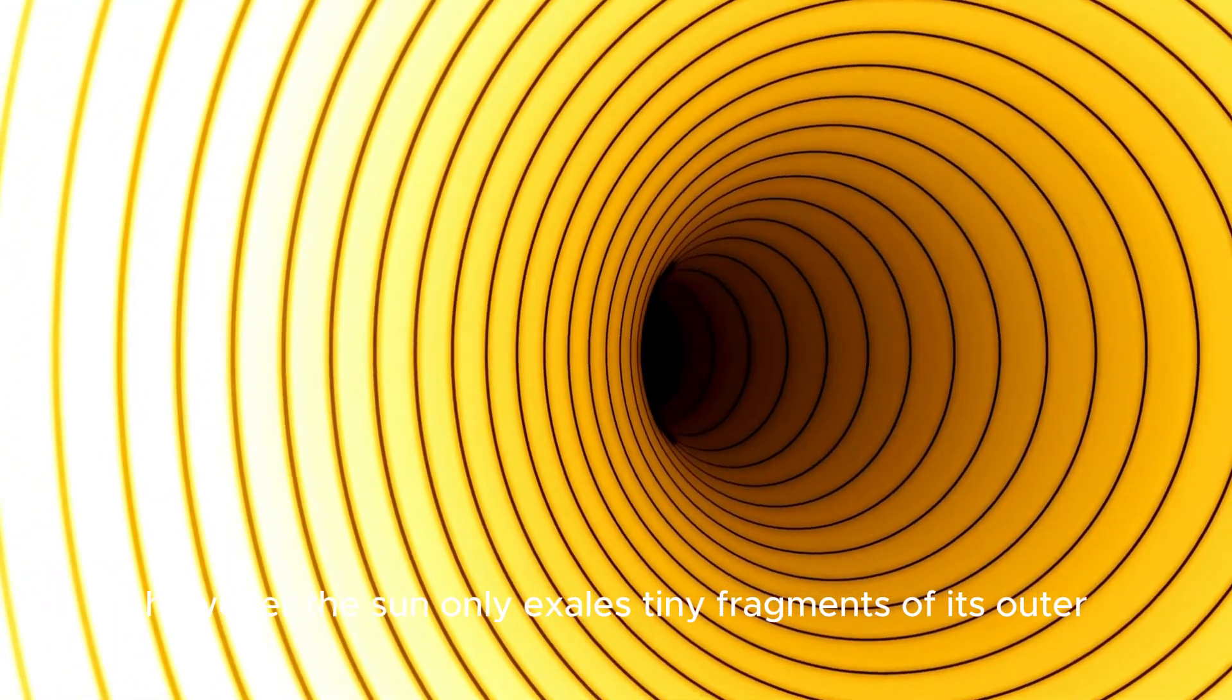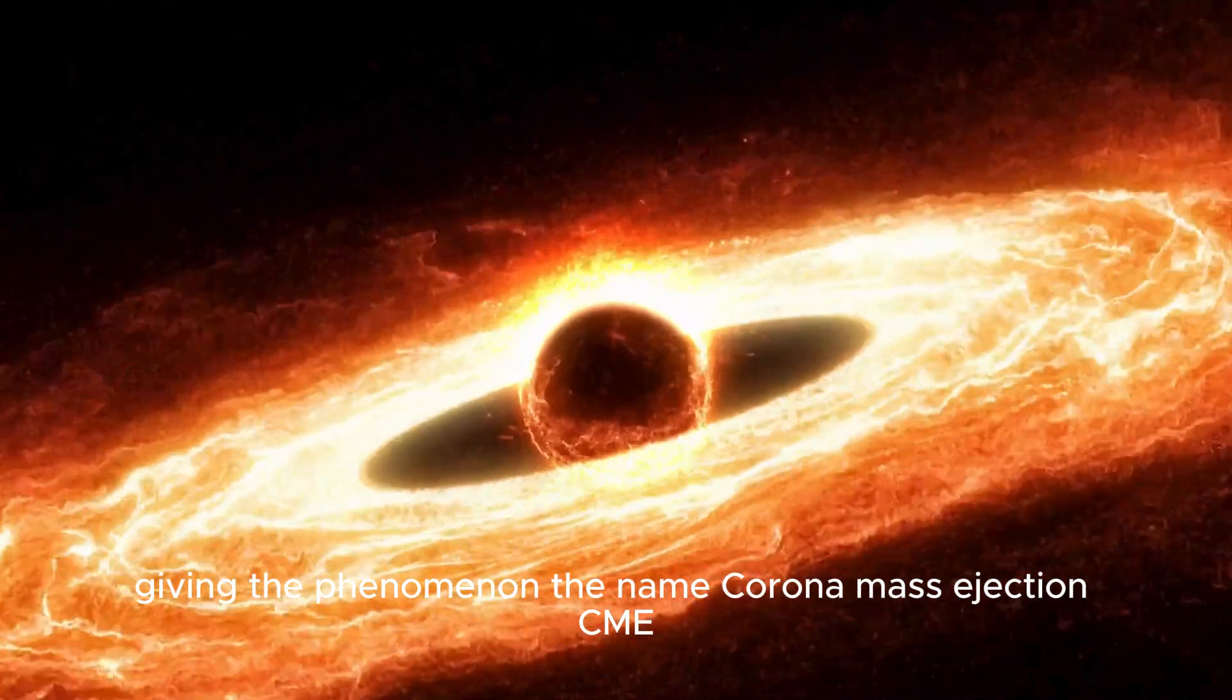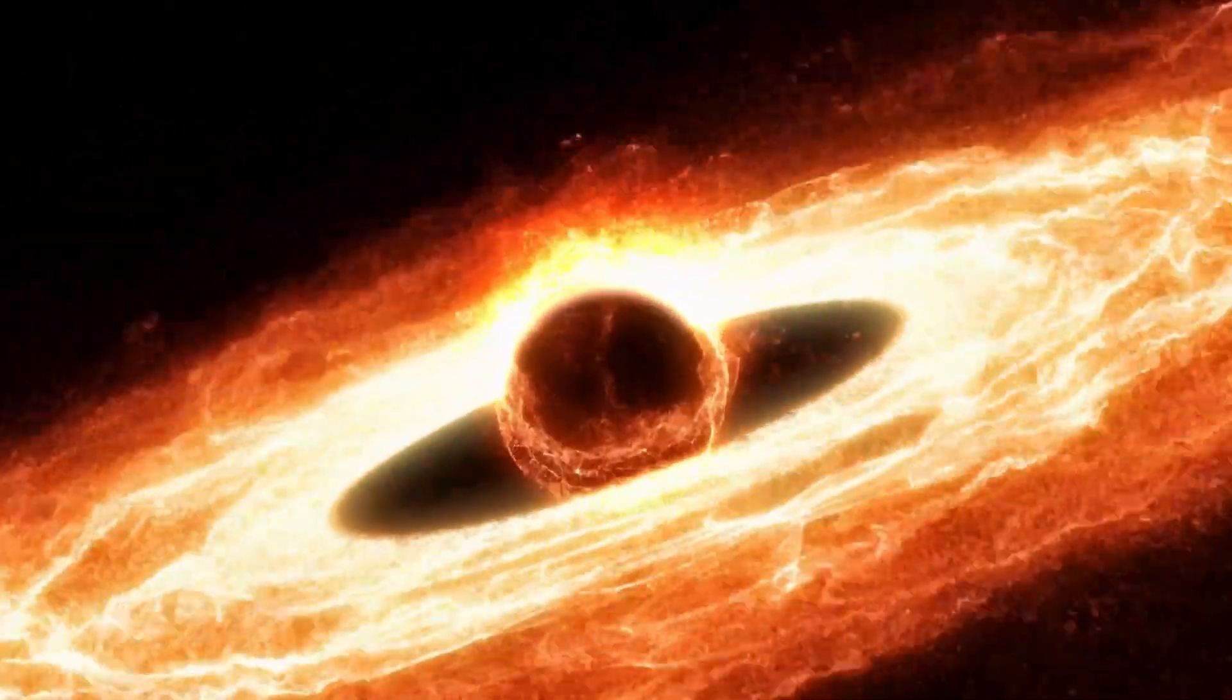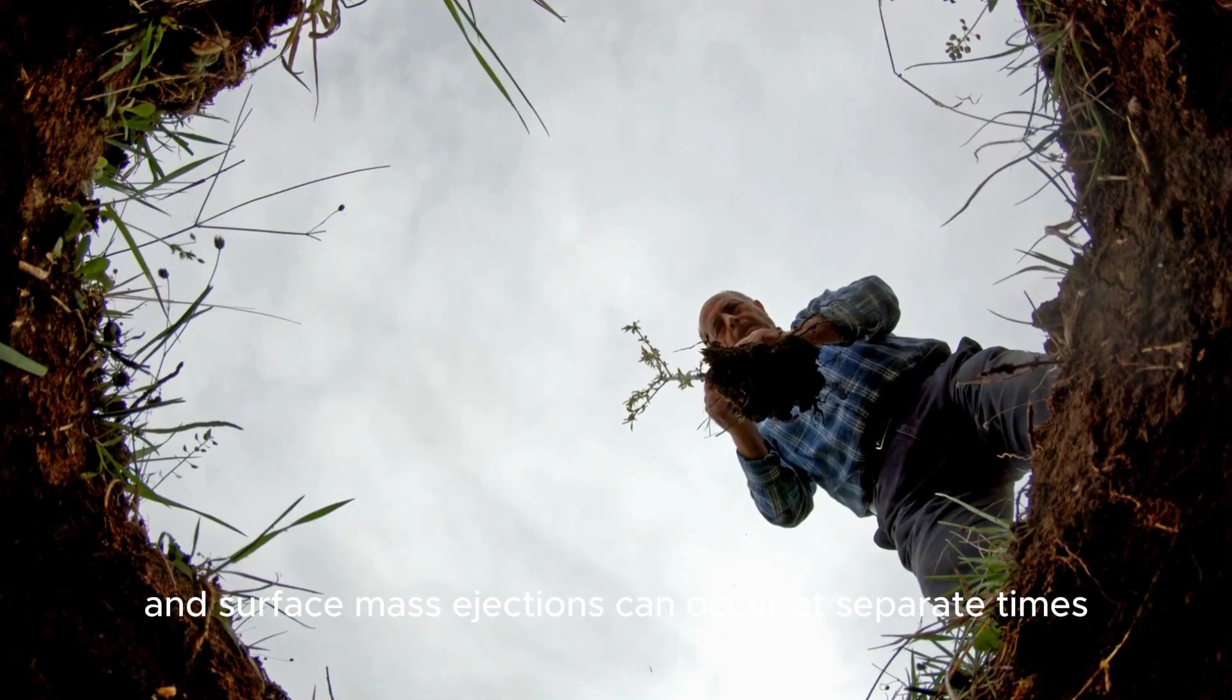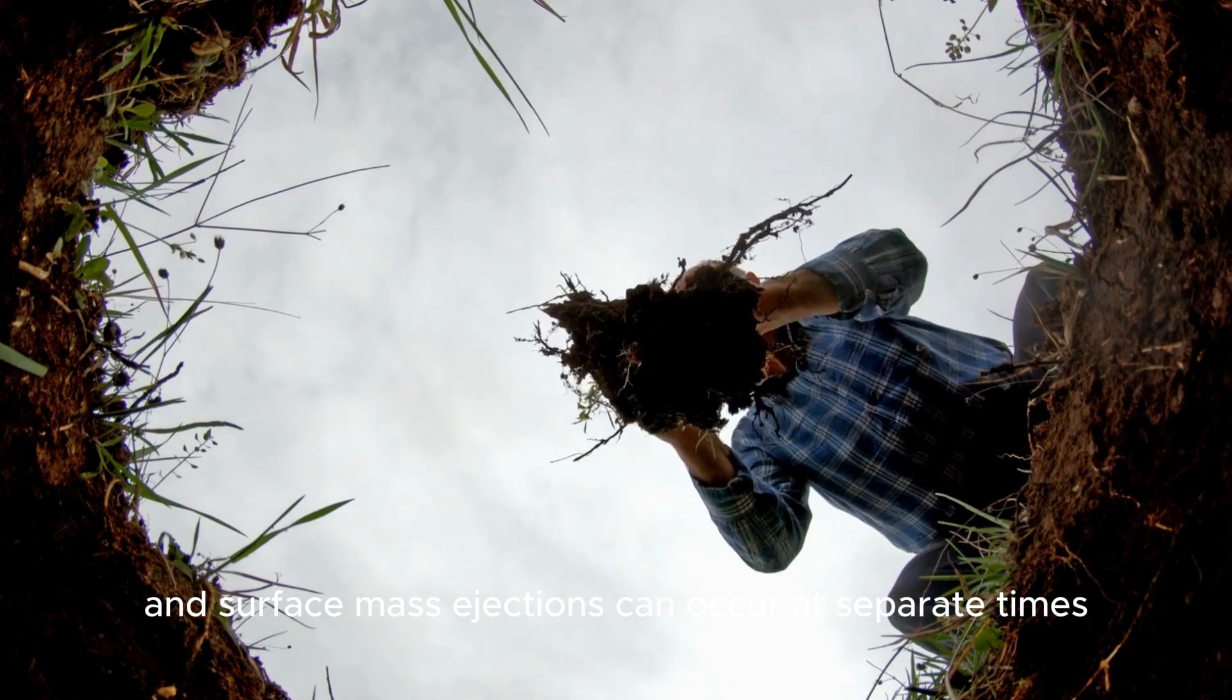However, the Sun only exhales tiny fragments of its outer atmosphere known as the corona, giving the phenomenon the name coronal mass ejection, CME. As a result, coronal mass ejections and surface mass ejections can occur at separate times.